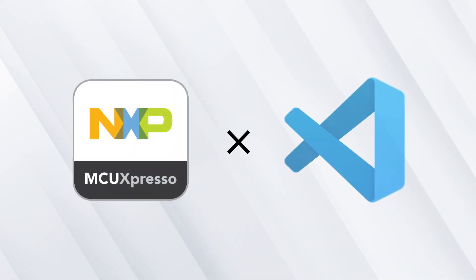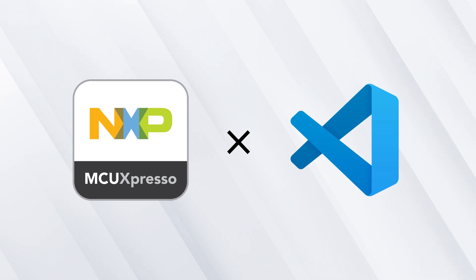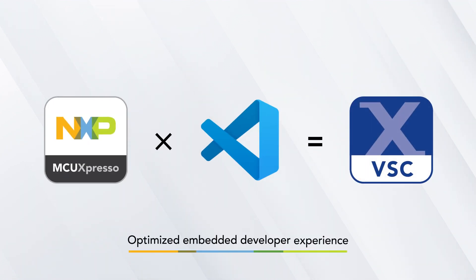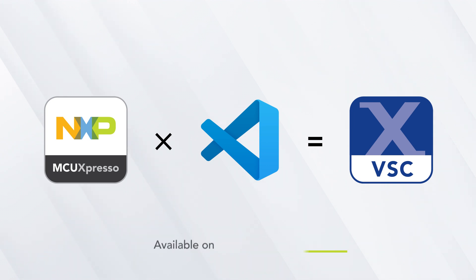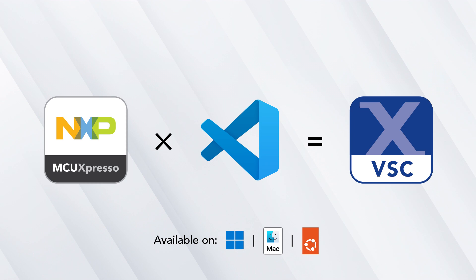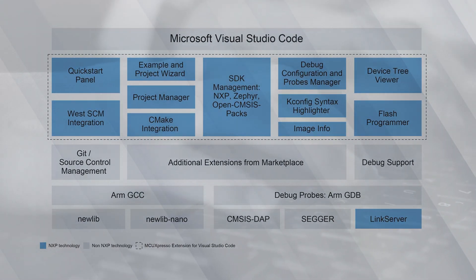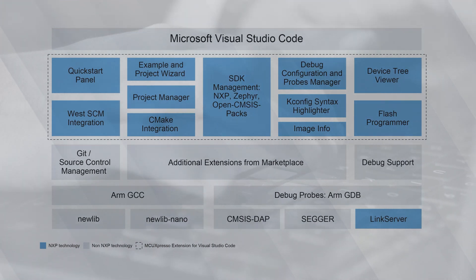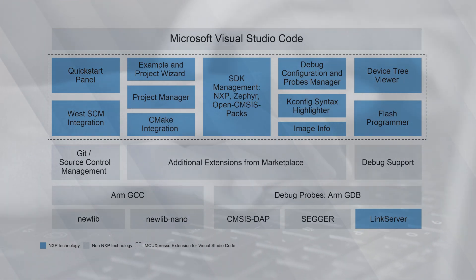MCU Expresso for VS Code is an extension for Microsoft's powerful Visual Studio Code platform that provides an optimized embedded developer experience. It is available on Microsoft Windows, Apple Mac OS, and Ubuntu Linux. It includes a suite of tools to seamlessly organize and manage projects and repositories, plus program and debug NXP microcontrollers.